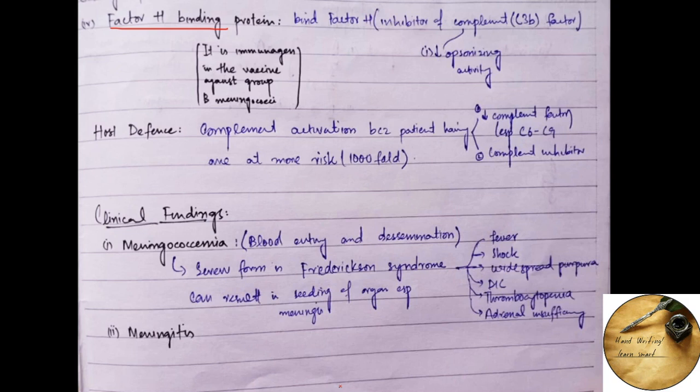The fourth one is the Factor H binding protein which binds to Factor H. Factor H binding protein binds to the Factor H which is an inhibitor of complement C3b factor.